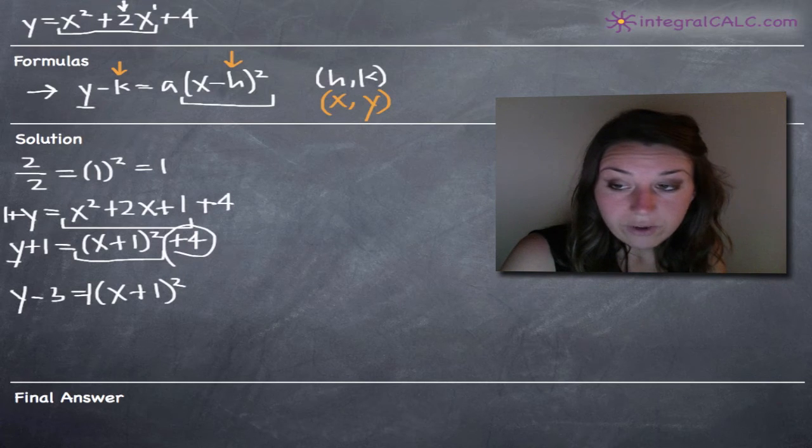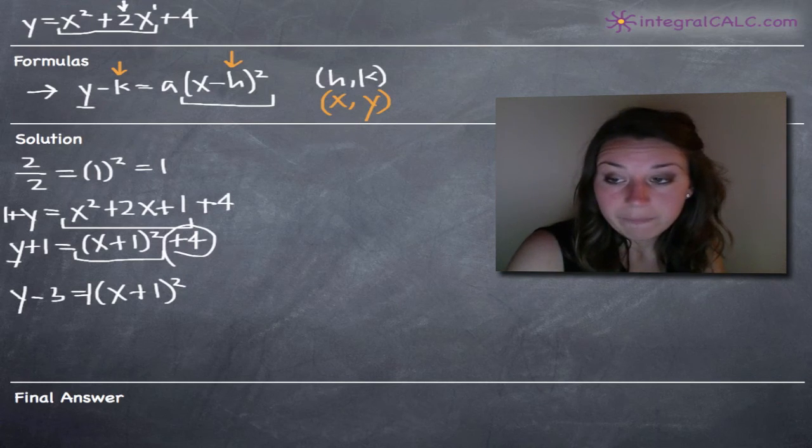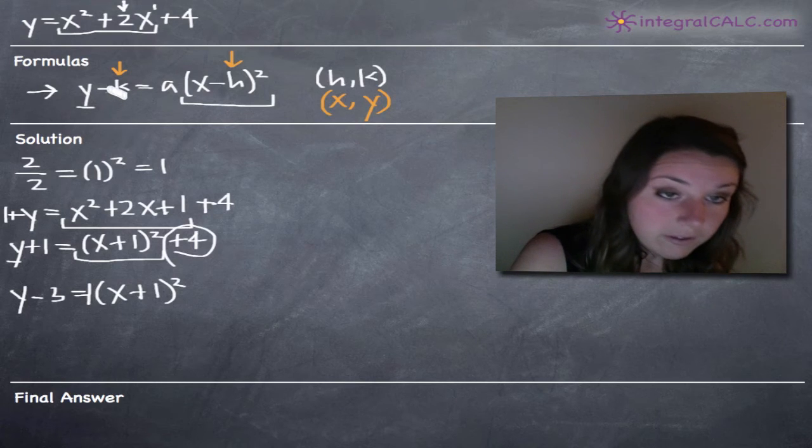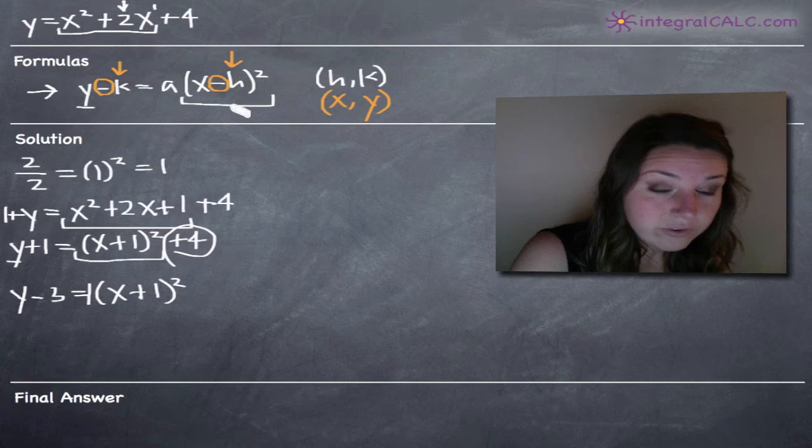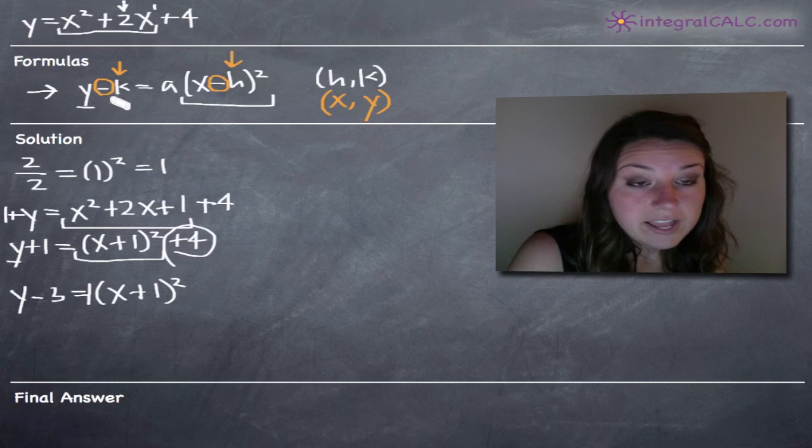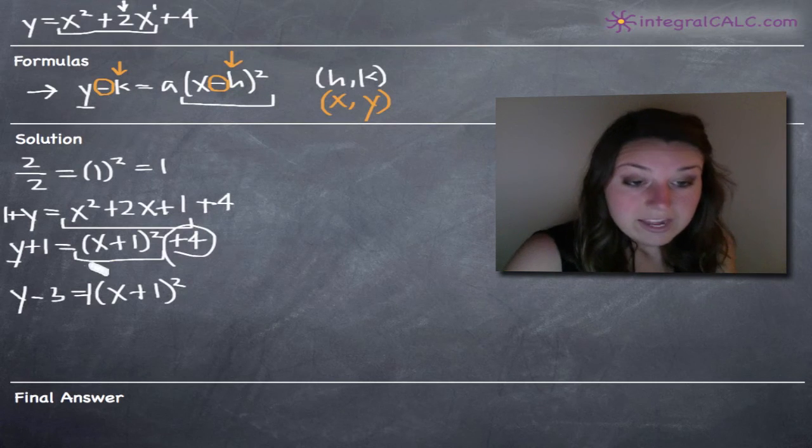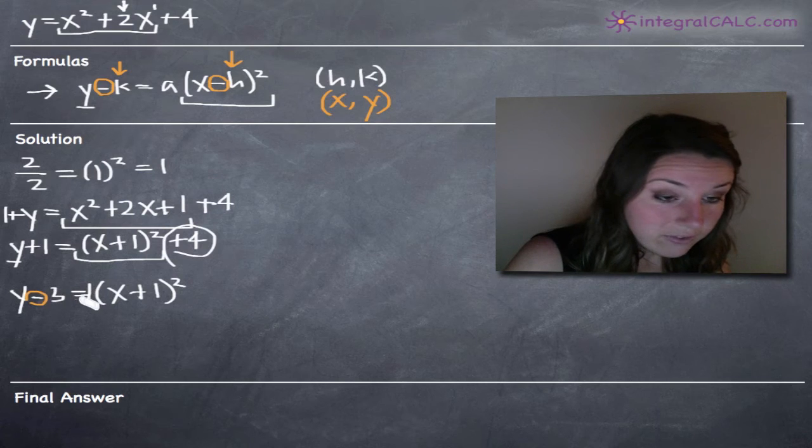The important thing to note at this step of the problem is that our formula is given to us in the form where we have negative signs on both the left and right side. We've got minus k and minus h.